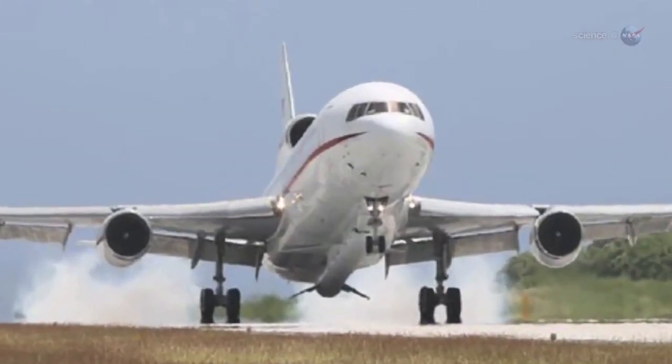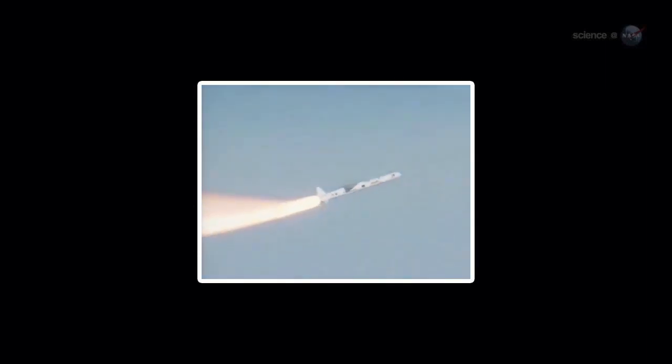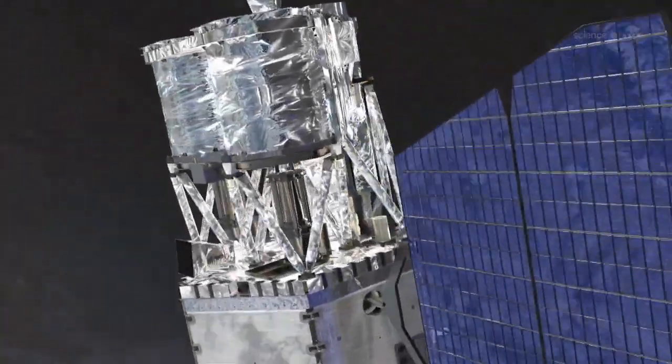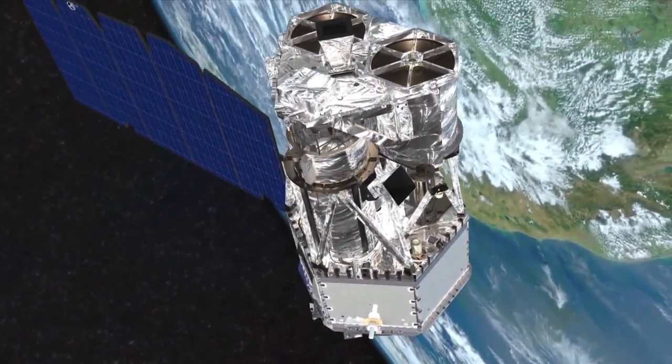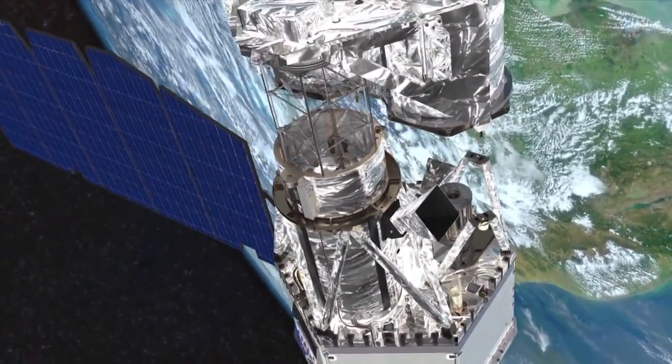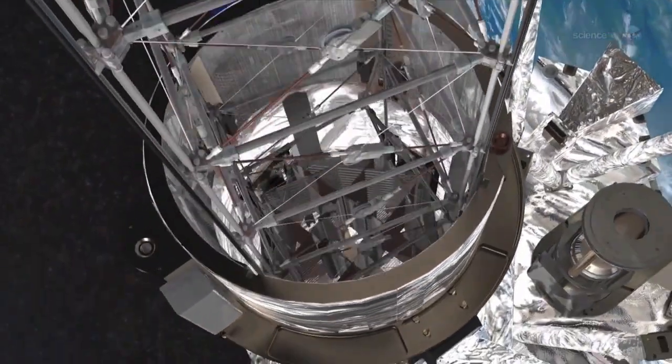Launched on June 13, 2012, onboard a Pegasus XL rocket dropped from an airplane high above the Pacific Ocean, NUSTAR is a small explorer satellite that carries the first space telescope that can focus very high-energy X-rays. NUSTAR will produce images roughly 100 times sharper than those possible with previous high-energy X-ray telescopes.